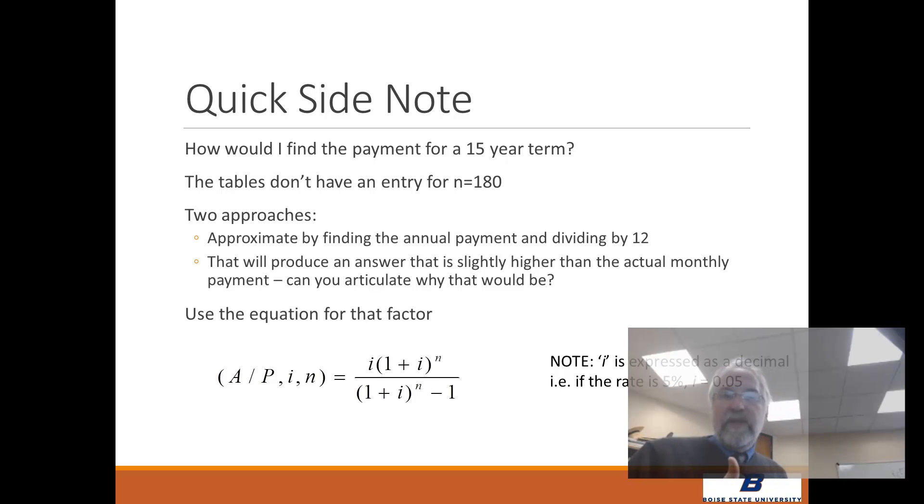Okay, so what you might be interested in is how about a 15-year term because that's a typical term. 10-year terms are a little rare, though they do have them. And it turns out this particular table that I found for you, they don't have N equals 180, which is a 15-year term per month. So you can actually go, can always go to the equations, right? And you can look it up, and again, I've got this PDF of all these equations downloaded in the same area of the blackboard. But for this A given P factor, it's equal to this arrangement of i's and n's. And again, when you use these equations, i is expressed as a decimal, not as a percentage. So it's not five, it's 0.05. You'd be amazed how easy it is to make that mistake. I speak from some experience there. So 0.05 is what you put in there. So you can go ahead and do that as well.